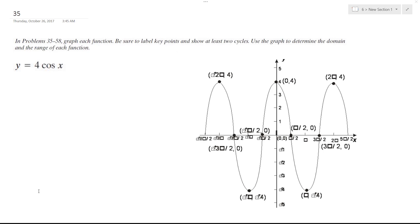Solving this problem, we've got y equals 4 times cosine of x. What we want to do is draw two cycles and label it, and I'm going to explain it to you.